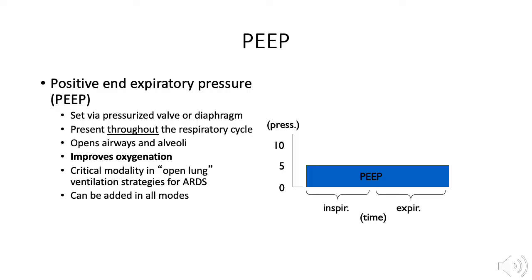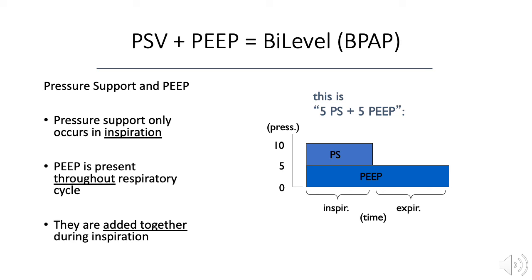PEEP is positive end-expiratory pressure. It is applied continuously through both inspiration and exhalation, but has its greatest effect at the end of expiration by preventing alveoli from collapsing, therefore decreasing atelectasis. PEEP improves oxygenation by decreasing closing capacity and preventing intrapulmonary shunting. PEEP can be added to any mode of ventilation and plays a key role in the management of ARDS. When PEEP and pressure support ventilation are added together, it is termed bi-level. PEEP is present throughout the respiratory cycle, but the pressure support is only applied during inspiration, creating two levels of pressure. The total inspiratory pressure is the pressure support ventilation plus the PEEP.